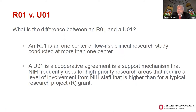An R01 is typically one center or a focused clinical research study, though it can be conducted at more than one center. A U01 is a cooperative agreement — a support mechanism that NIH frequently uses for a high-priority research area that requires the involvement of NIH staff at a higher level than a typical R grant.